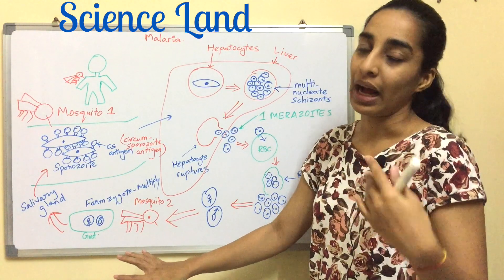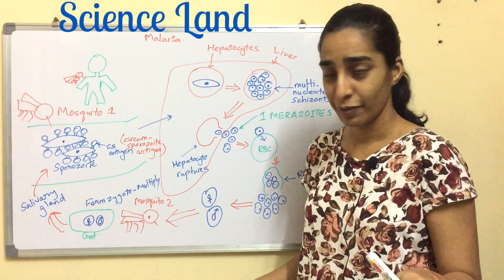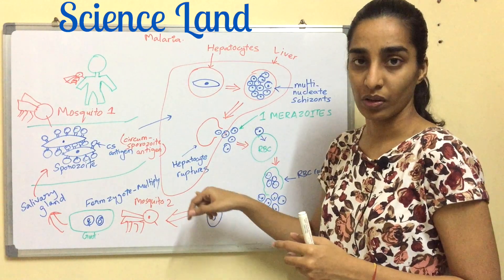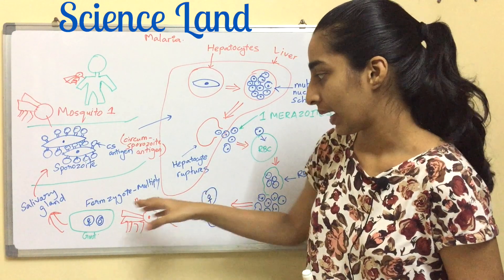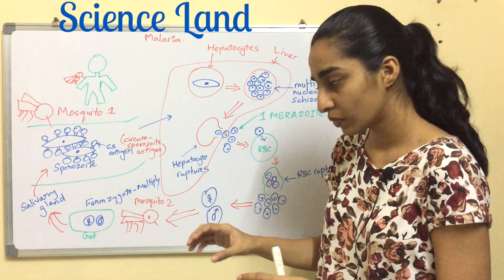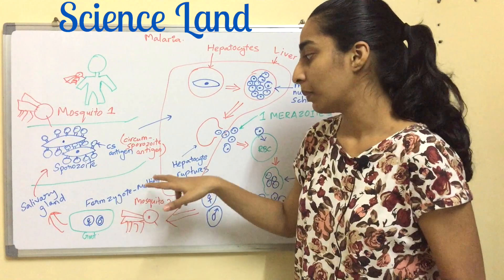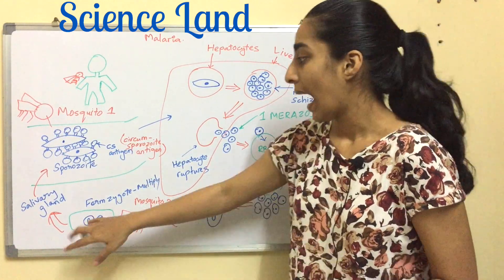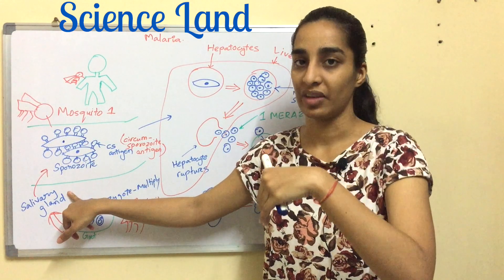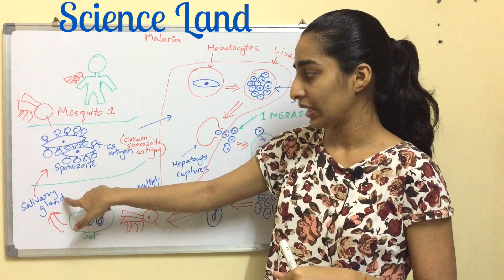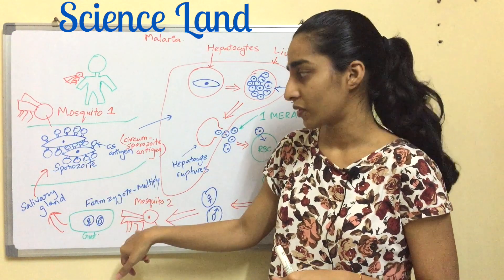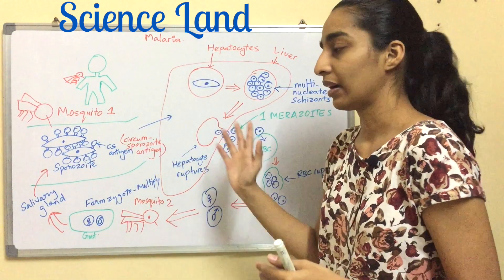The remaining merozoites stay in the body, causing symptoms and carrying forward the disease. When another uninfected mosquito feeds on the blood, it takes up the gametocytes. In the mosquito's gut, the two gametes fuse to form a zygote, which multiplies and differentiates. Sporozoites are then ready to be released through the salivary gland, making the mosquito infected again — completing the life cycle.